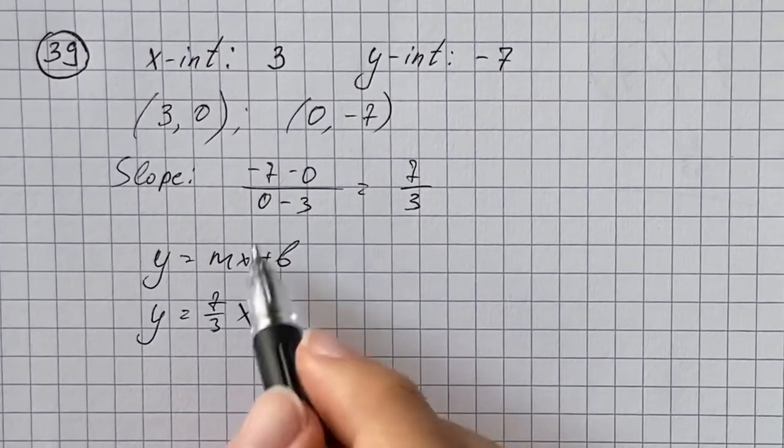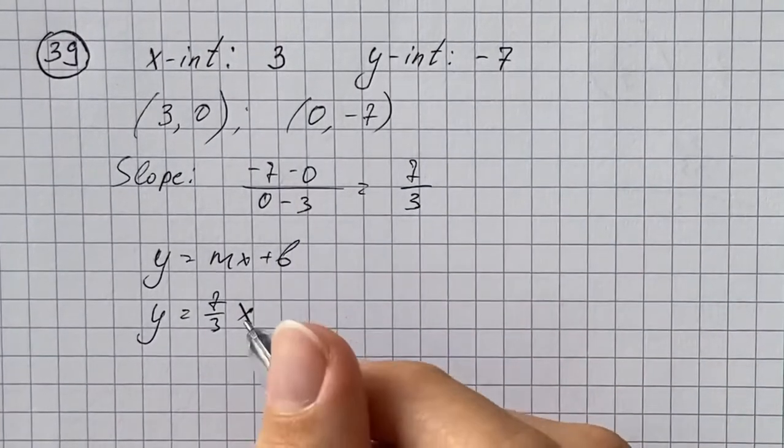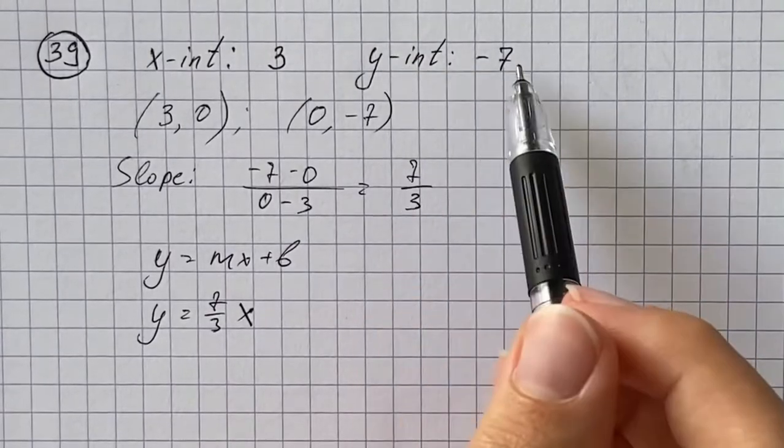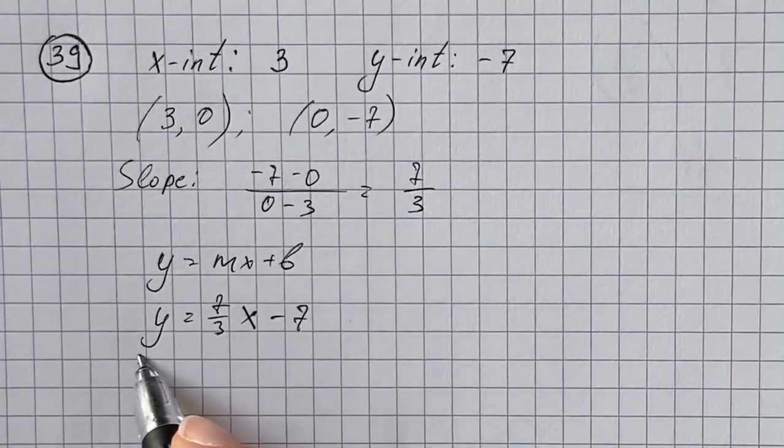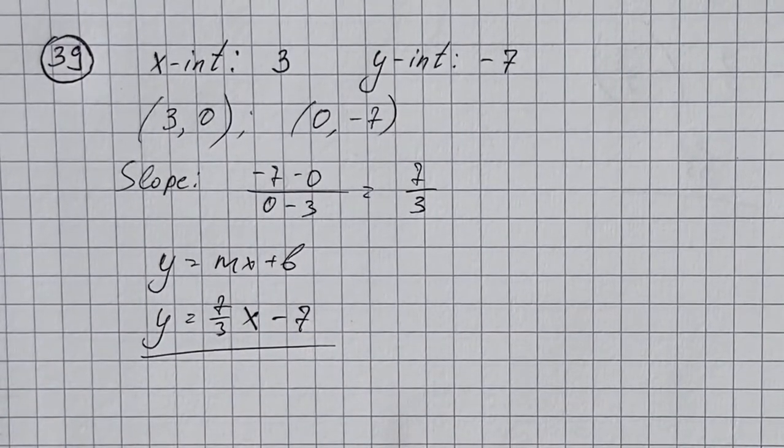And here we're going to use y-intercept, so we just add negative 7 or write minus 7. And that's going to be the equation of our line.